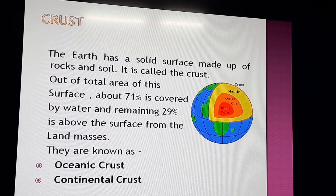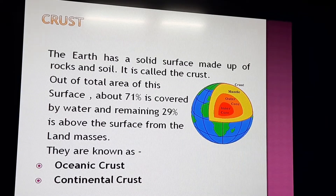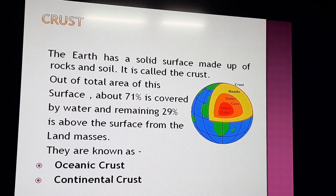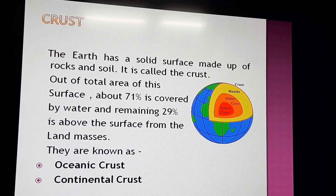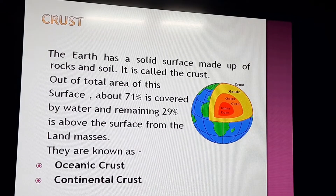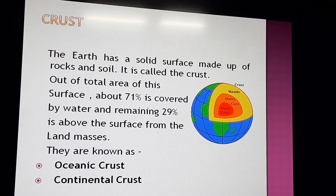The first topic is the crust. We all know our earth is spherical in shape and has different layers. The earth is a solid surface made up of rocks and soil — you can find rocks and soil in any agricultural field. This surface made up of rock and soil is called the crust. It is the outermost layer of the earth.